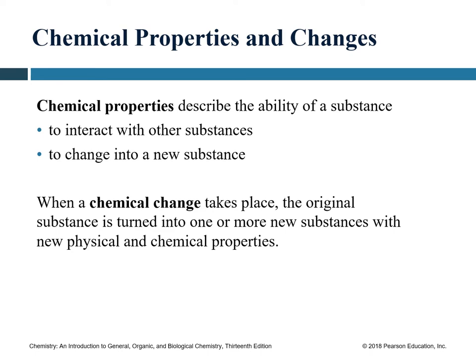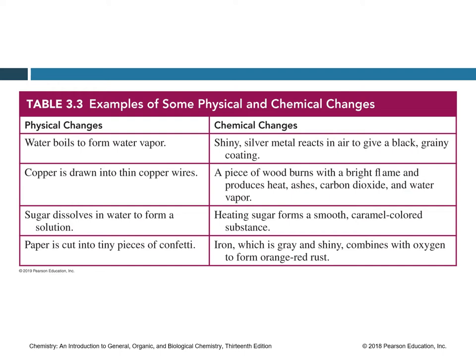Chemical properties describe the ability of a substance to interact with other substances and change into a new substance. A chemical change is when the original substance is turned into one or more new substances with new physical and chemical properties — the composition of the substance is changed. Some examples of physical changes: water boiling to form water vapor (still H₂O), copper drawn into thin copper wire (still Cu), dissolving sugar in water (still sugar), and paper cut into confetti (still chemically paper).